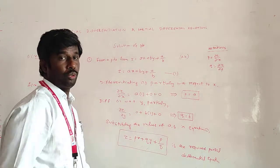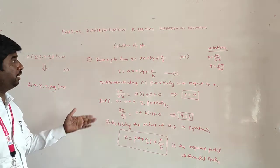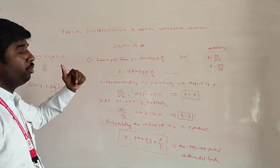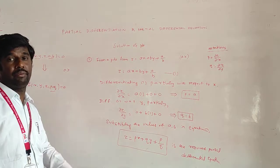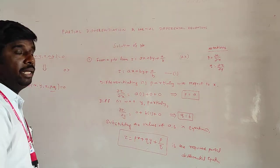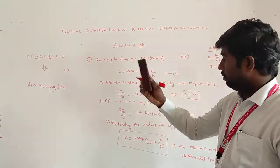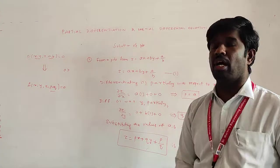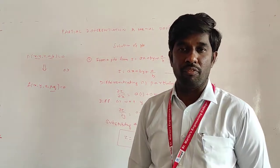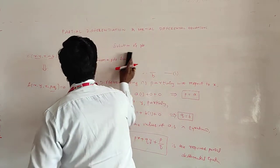We had an equation involving variables x, y, z, A, B = 0, and we obtained a partial differential equation from it. This is one of the examples of elimination of arbitrary constants, or forming a partial differential equation. Similarly, we can solve for elimination of arbitrary functions in partial differential equations. Let us see that with an example.